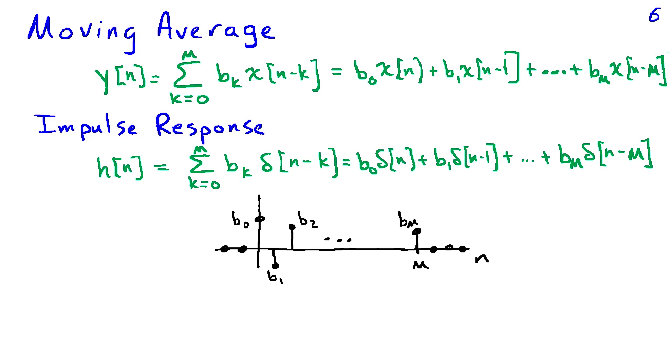We can find the impulse response of this system by putting an impulse as the input. So I'm going to replace x with delta, and that gives me the impulse response, h of n, as the sum of k equals 0 to m bk delta of n minus k. Or, again, writing out the sum, we have b0 delta of n plus b1 delta of n minus 1, and so on, up to b sub m delta of n minus m.